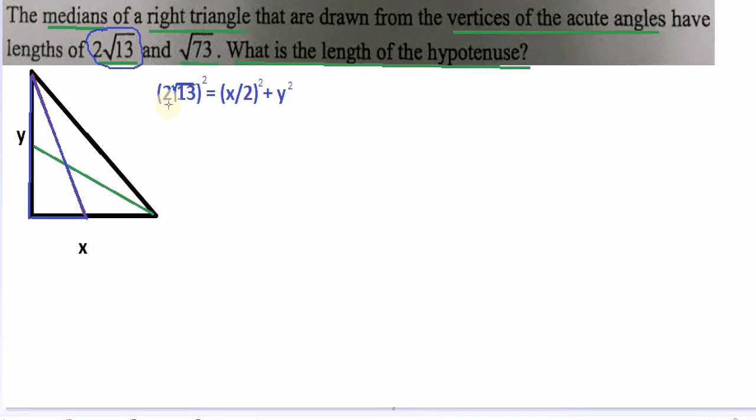By assigning this one to the hypotenuse, I can just write down the Pythagorean theorem here. The hypotenuse squared equals this side, which is x over 2 squared, plus this side squared. So, that's how we get that equation.